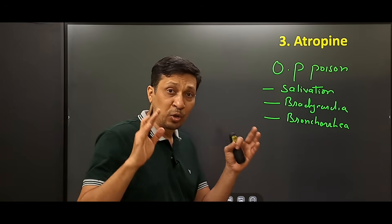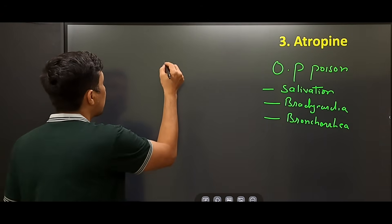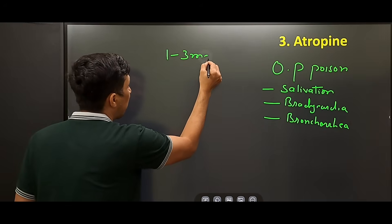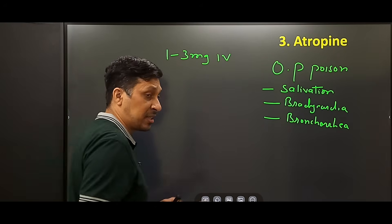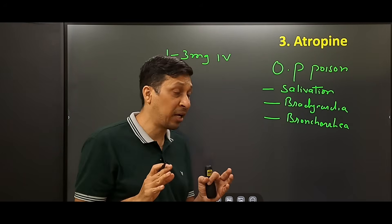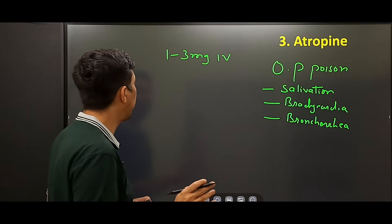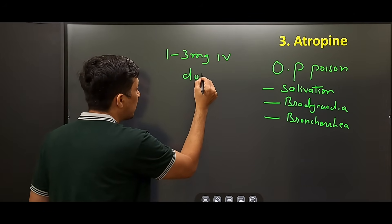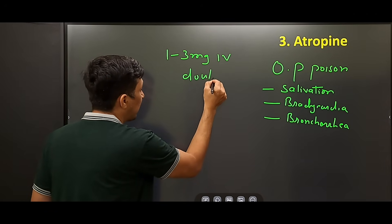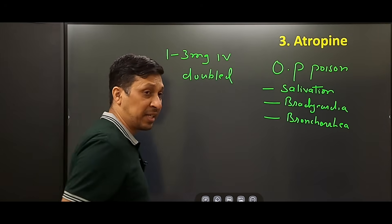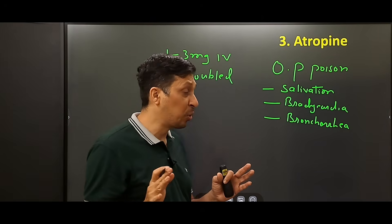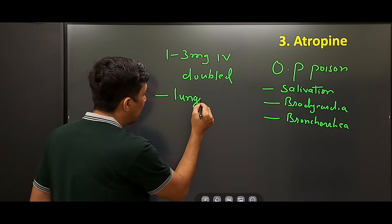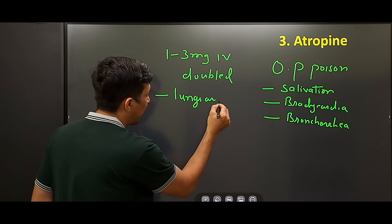The dose of atropine is 1 to 3 mg IV, repeated every 5 to 10 minutes, with the dose doubled each time it is repeated. It is continued — and this is important — until the lungs are dry.